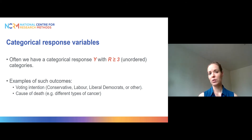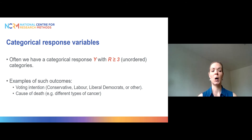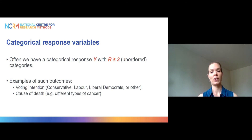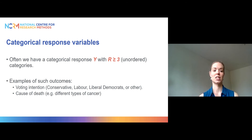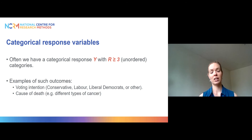Examples of these types of outcomes include voting intention — data about what party respondents are planning to vote for in the next election, whether it's Conservative, Labour, Liberal Democrats, or some other party, giving us four categories. It could also be, if you're a demographer like me, something like cause of death — figuring out which characteristics are associated with different types of cancer as a cause of death.